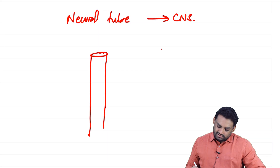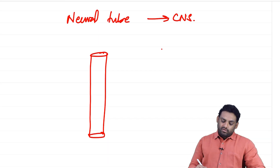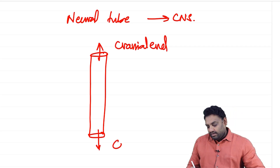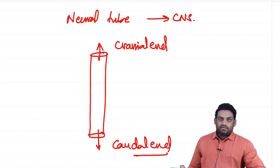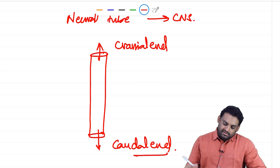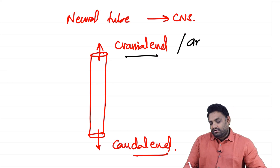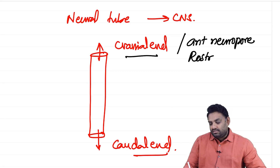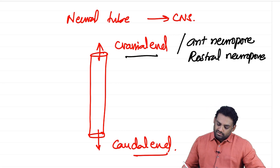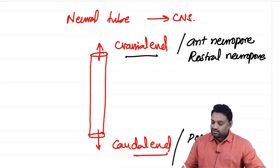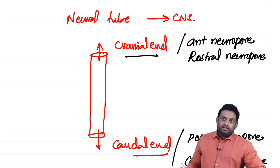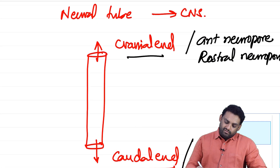The neural tube has two openings: one on the cranial end and one on the caudal end. The cranial end opening is called the anterior neuropore, also known as the rostral neuropore. The caudal end opening is called the posterior neuropore or caudal neuropore.